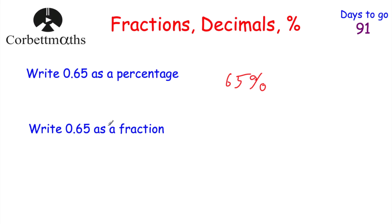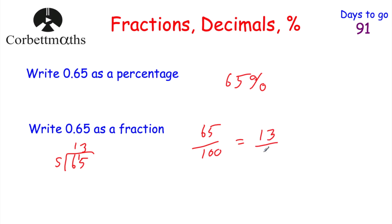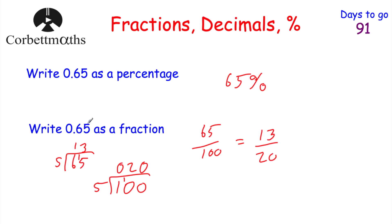And to write 0.65 as a fraction, it's 65 hundredths, so we write that down: 65 hundredths. Now 65 and 100 are both divisible by 5, so dividing both by 5 gives us 13 on the numerator and 20 on the denominator. So 0.65 as a fraction is 13 over 20. If you got that correct, well done.